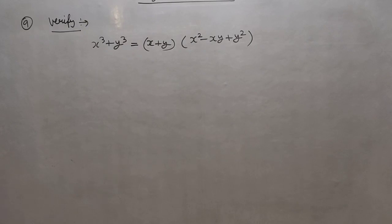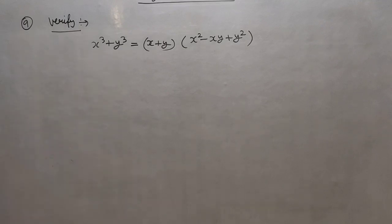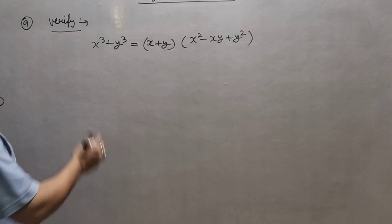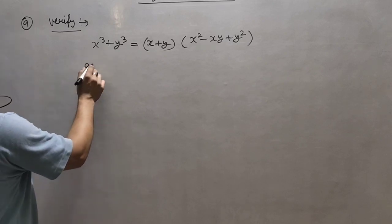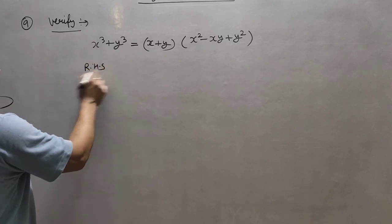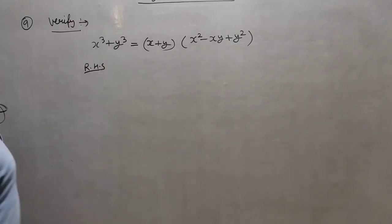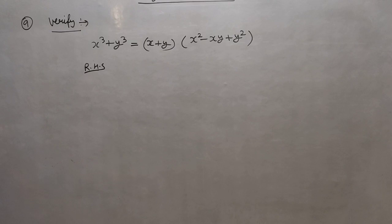Question number 9: verify that x³ + y³ = (x+y)(x² - xy + y²). This is an identity we have to verify is correct. For verification, we will take the right-hand side, because you know, going from left to right to verify is somewhere very difficult.